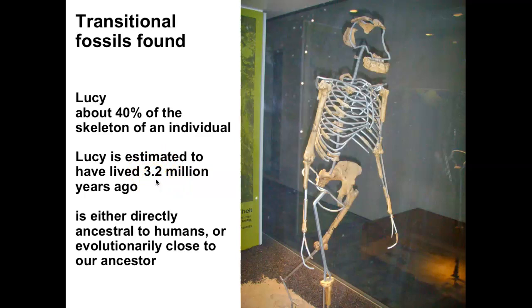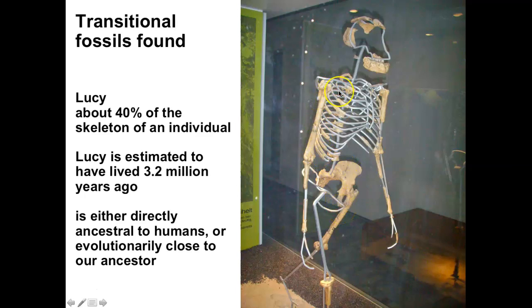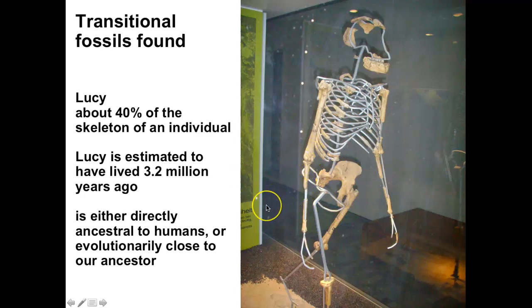3.2 million years ago this creature lived and inhabited the earth. When scientists assembled Lucy's bones, they found they are very similar to both human bones and ape bones. She was standing in an upright fashion — you can tell this from how the bones fit together. Her anatomy is very similar to both humans and apes, making her a really great transitional fossil.